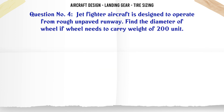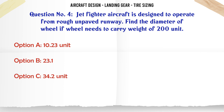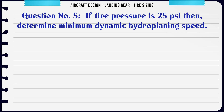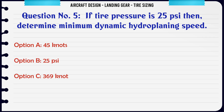A jet fighter aircraft is designed to operate from a rough unpaved runway. Find the diameter of the wheel if the wheel needs to carry a weight of 200 units. A) 10.23 units, B) 23.1, C) 34.2 units, D) 1.023 units. The correct answer is 10.23 units.